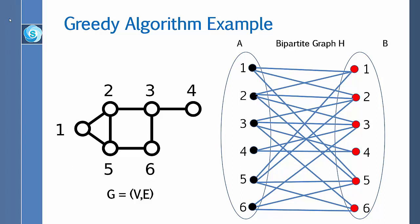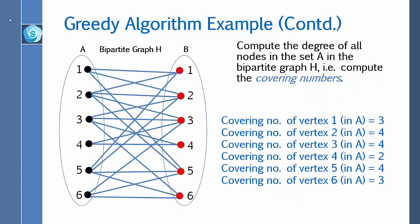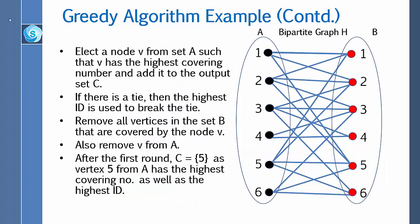After constructing the bipartite graph, I will describe how to find a minimum dominating set first, and then how to find a minimum connected dominating set. Here is the bipartite graph H constructed from the original graph G. Now compute the degree of all nodes in set A — that is, compute the covering numbers. The covering number of vertex 1 is 3, vertex 2 is 4, vertex 3 is 4, vertex 4 is 2, vertex 5 is 4, and vertex 6 is 3.